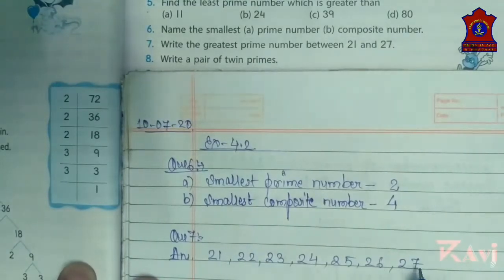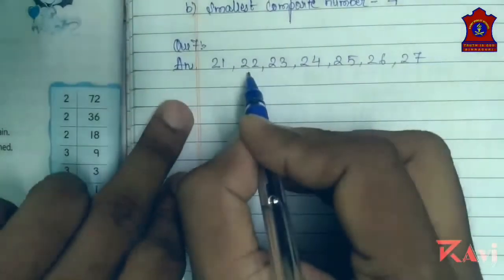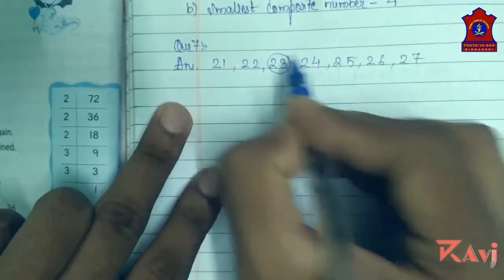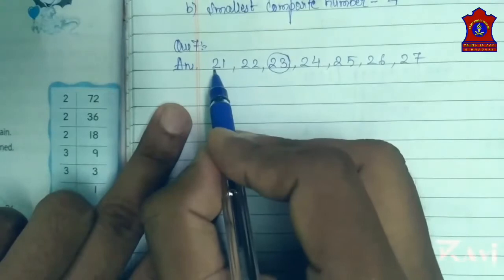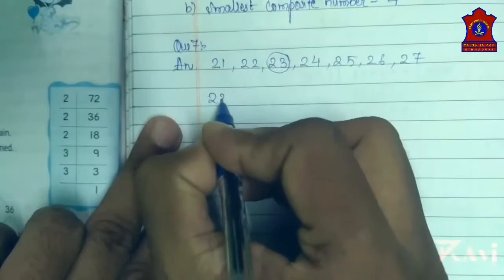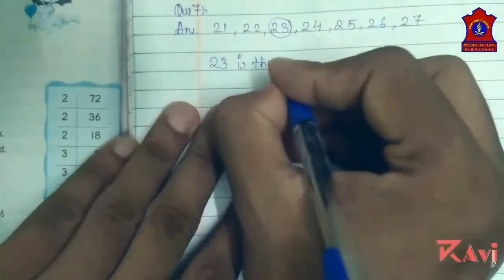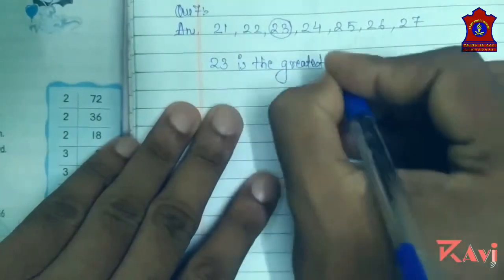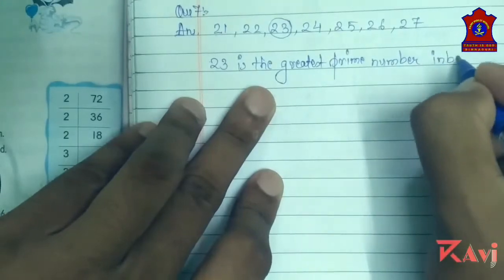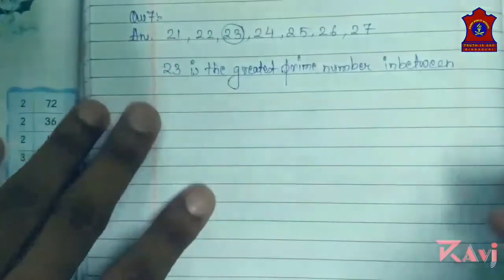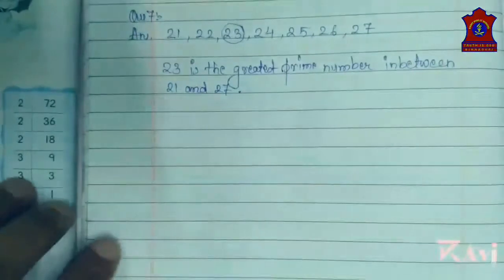Now circle all the prime numbers. 21 is not a prime number. 22 is not a prime number. 23 is a prime number. 24 is not a prime number. 25 is not a prime number. 26 is not a prime number. 27 is not a prime number. So the prime number between 21 and 27 is 23, which is the greatest prime number in between 21 and 27. Question number 7 is done. You have to show working like this — don't write the answer directly.